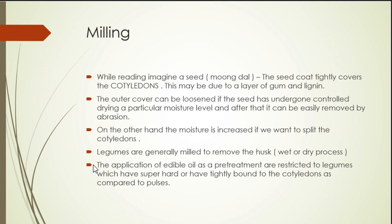You can imagine this like removing the skin of almonds or pistachios — you put them in water to loosen the cover. Similarly, if you want to split the cotyledon to get split dal, you need to add moisture to achieve that status. Legumes are generally milled to remove the husk by wet or dry process. The application of edible oils as a pre-treatment is restricted only to legumes, which have a super hard cover with the cotyledon tightly bound.